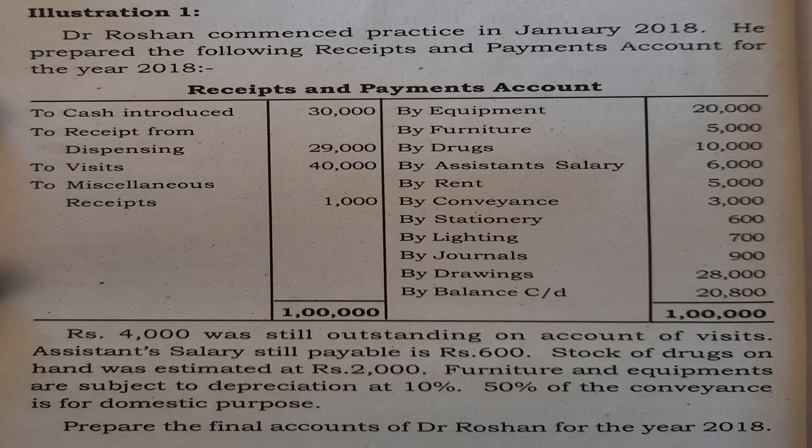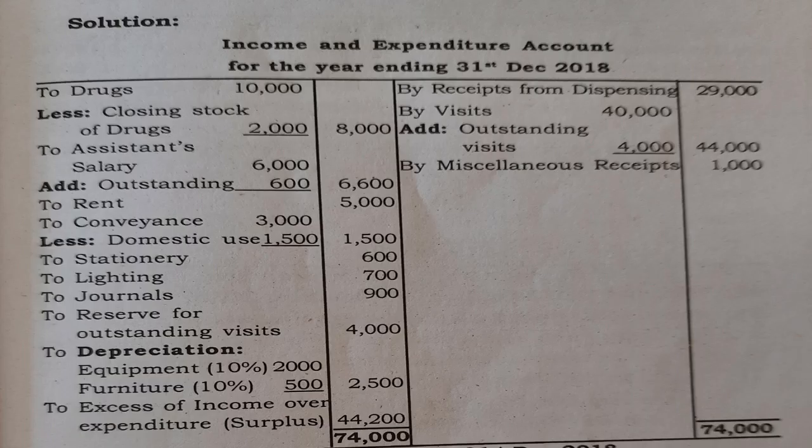Prepare the final accounts of Dr. Roshan for the year 2018. First, you have to prepare the income and expenditure account for the year ending 31st December 2018. On the debit side, record expenses, and on the credit side, record income.